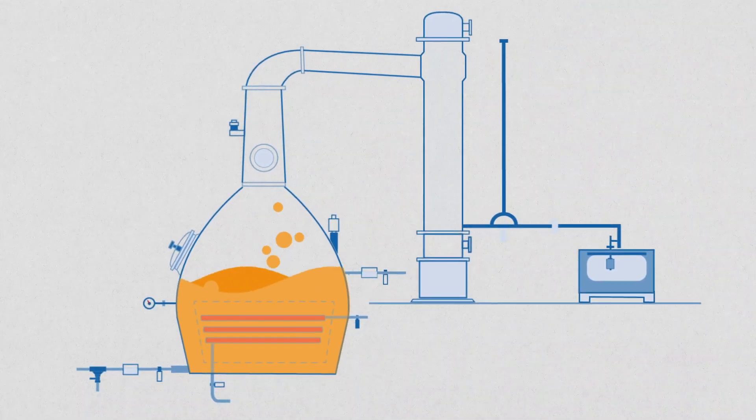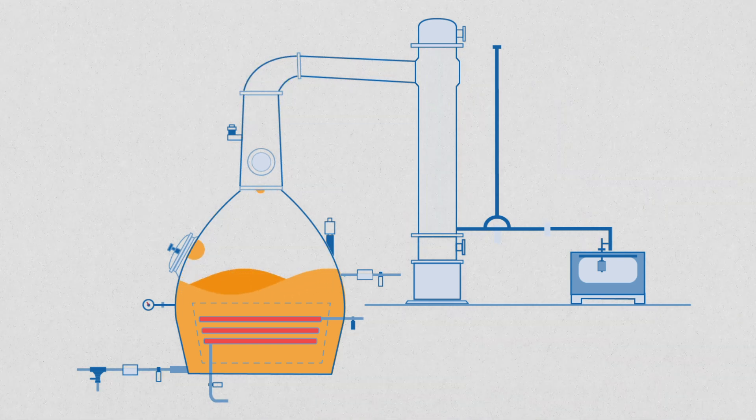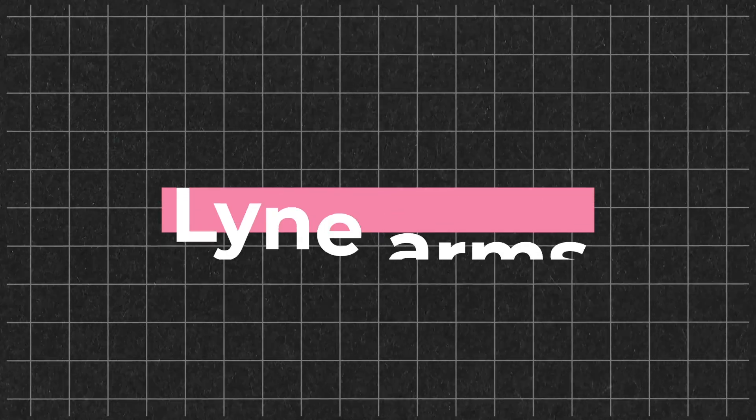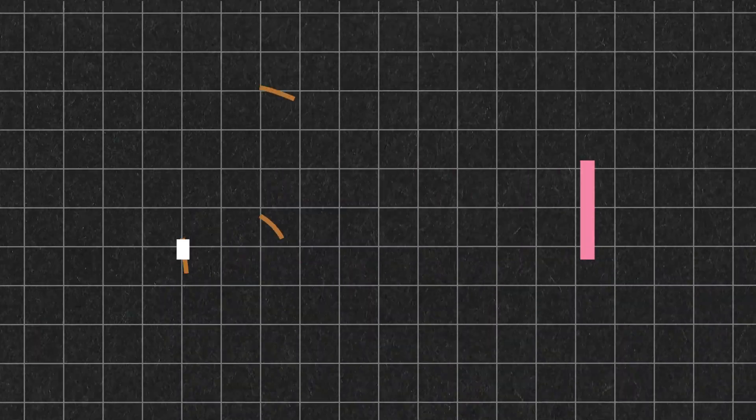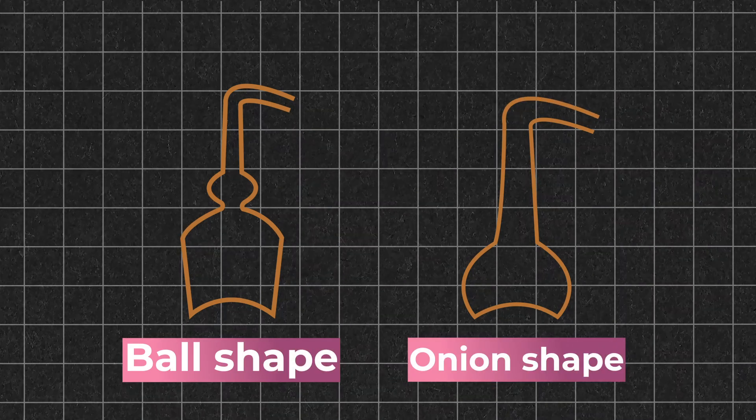We have these high volatility components in the wash rising up in gas form. They go up the still, and depending on what type of still the distillery has, they may pass through a ball or onion shaped section. Each still shape will have a different degree of copper contact and reflux that will impact the overall character of the spirit.